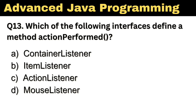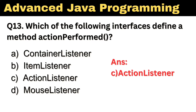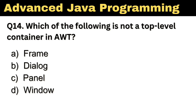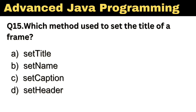Question No. 13: Which of the following interfaces define a method action performed? The right answer, Option C, ActionListener. Question No. 14: Which of the following is not a top-level container in AWT? The right answer, Option C, Panel. Question No. 15: Which method is used to set the title of a frame? The right answer, Option A, SetTitle.